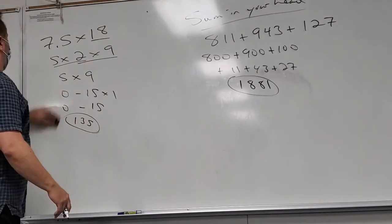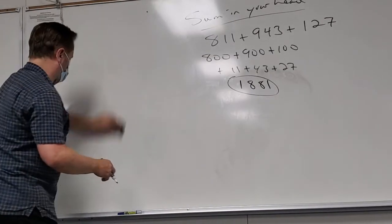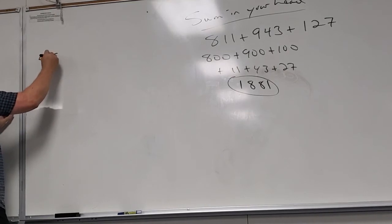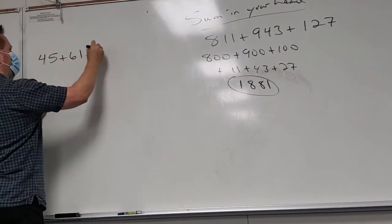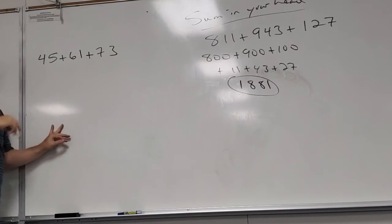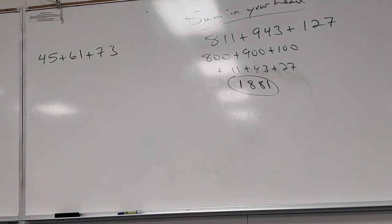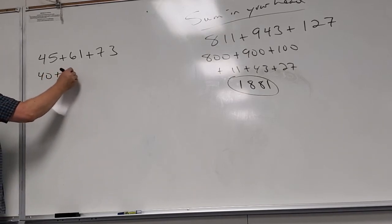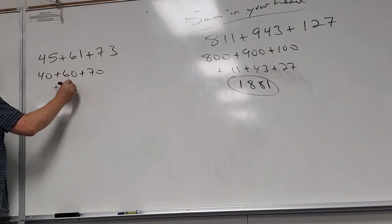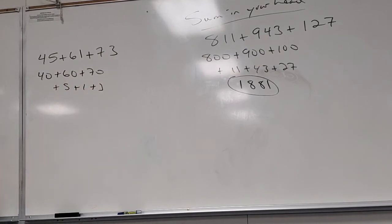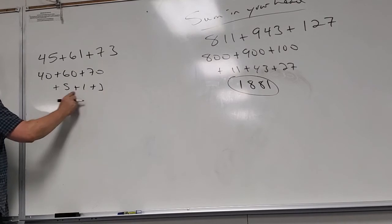Let's try a cleaner version: 46 plus 35 plus 73 — look for complementary pairs. 40 plus 60: wait, it's 40 from 46 and 30 from 35 and 70 from 73. 40 and 60 would be perfect — notice 40 and 60 don't both appear, but 40 plus 60 equals 100. Then the ones: six plus five plus three equals fourteen. Total: 114... then adding tens: 170 plus 9 equals 179.